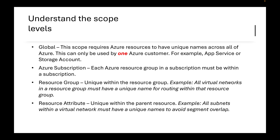So where do you start in Azure to properly do your naming convention? First, we need to start with understanding the scope levels. There are four: global, Azure subscription, resource group, and resource attribute. At the global scope, Azure resources must have unique names across all of Azure — they can only be used by one Azure customer. Examples include App Service and storage accounts. When creating a storage account, you may have seen the message that a name is already taken, requiring you to add digits.